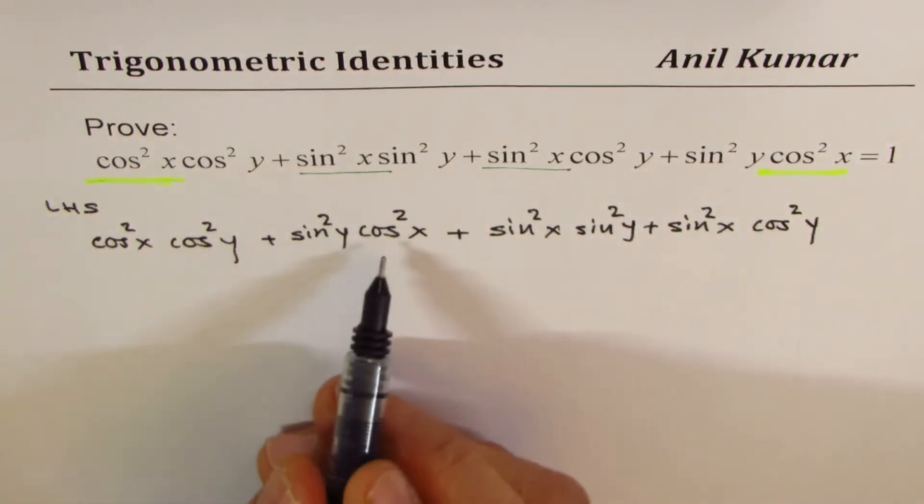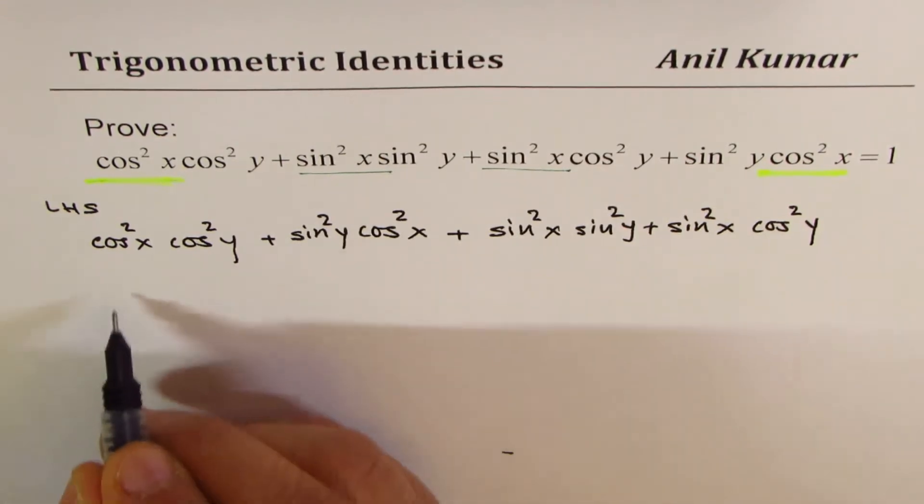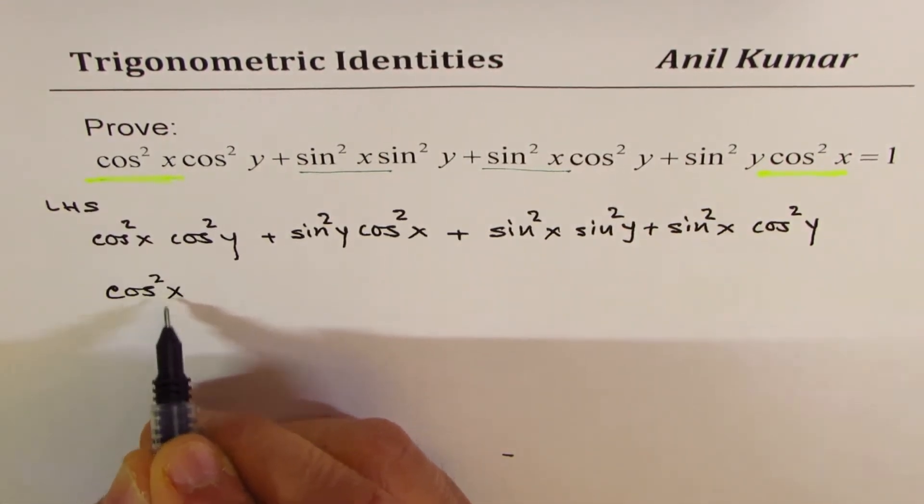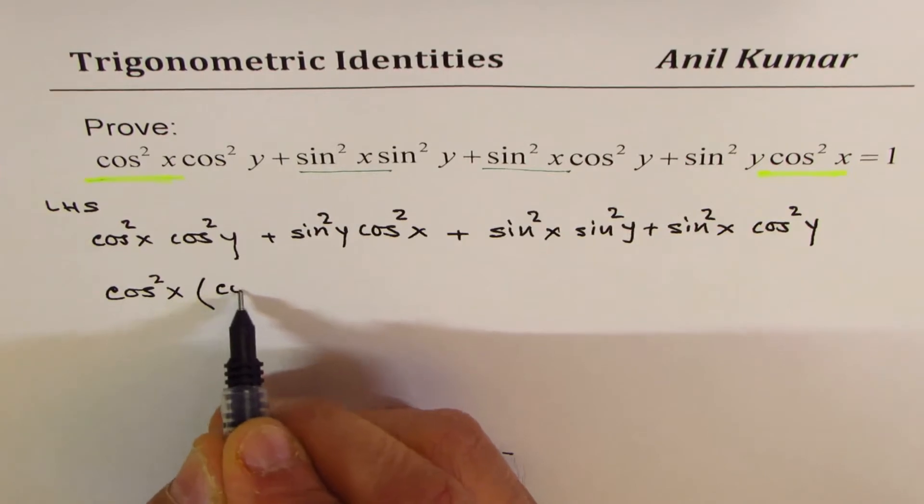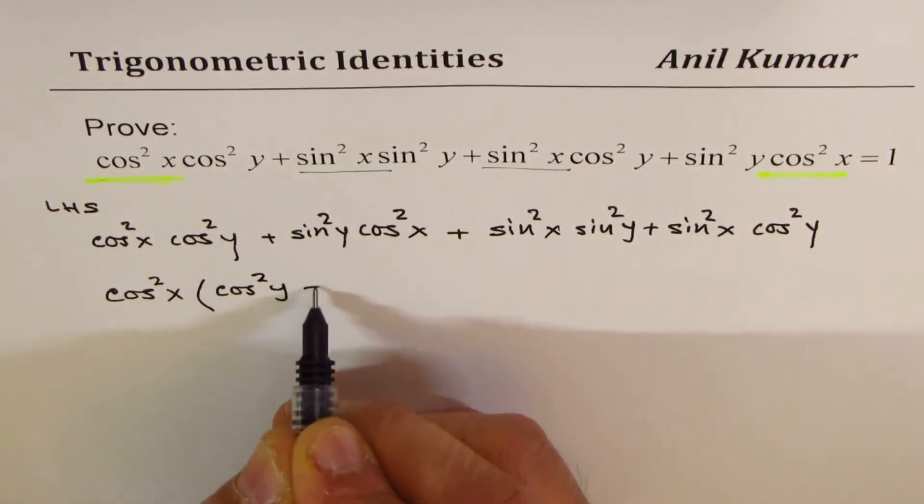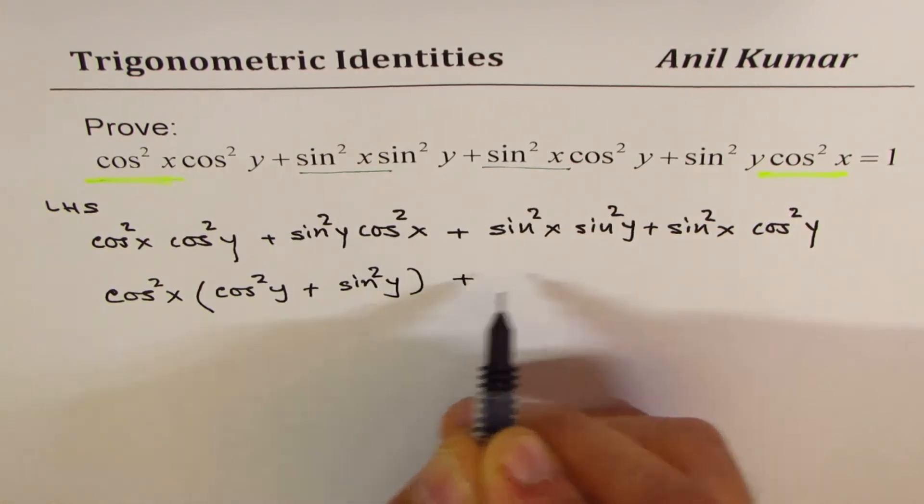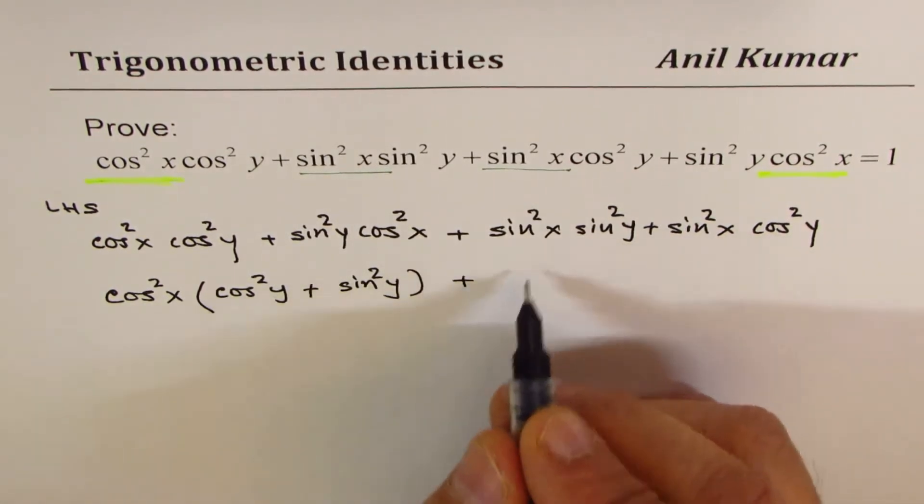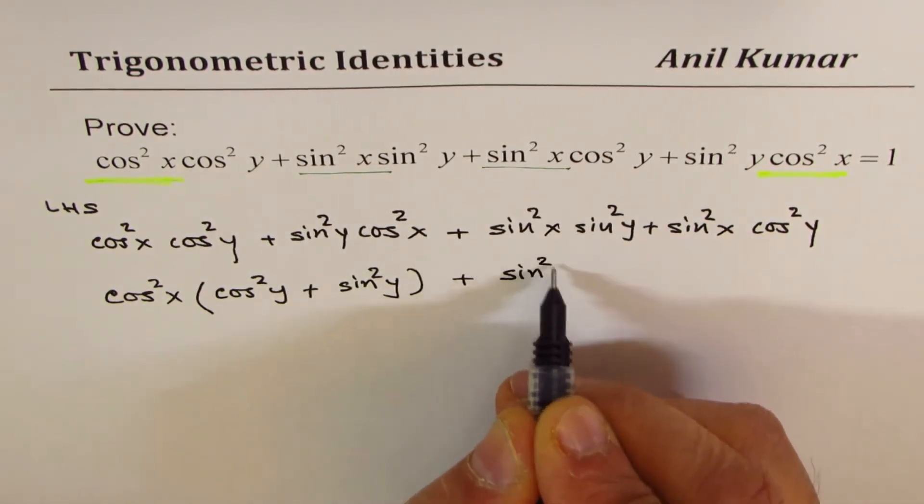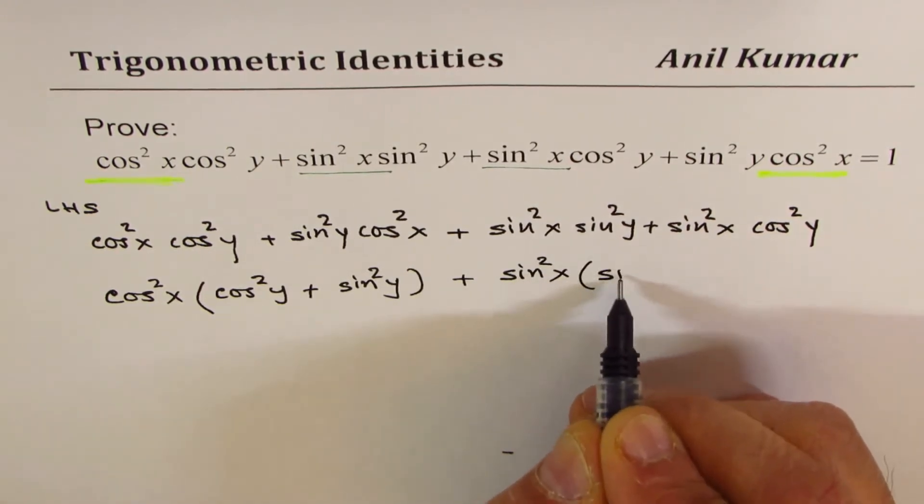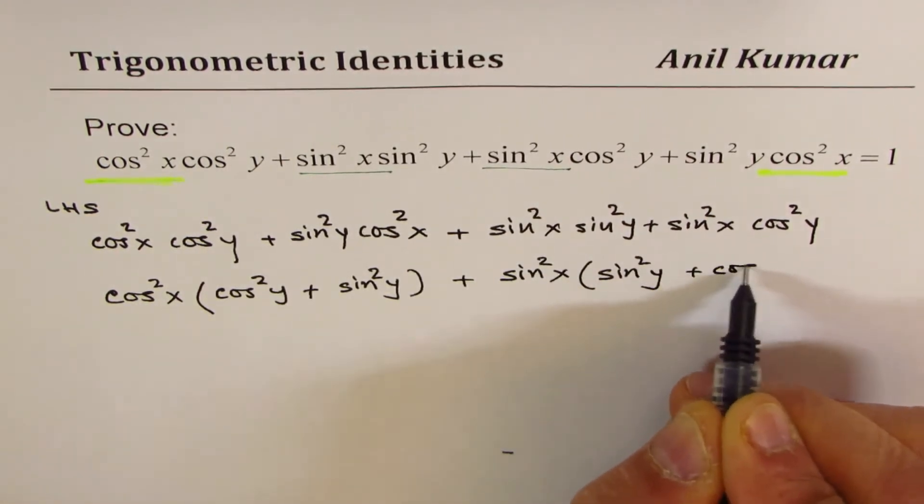Now, as we had seen, cos²x is common in the first two terms. Let's factor that out. So we have cos²x, and what are we left with? We get cos²y plus sin²y. And within these two terms, we have sin²x common.